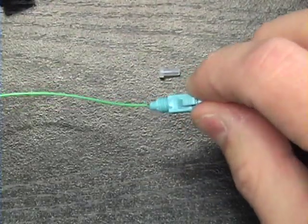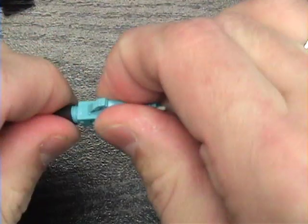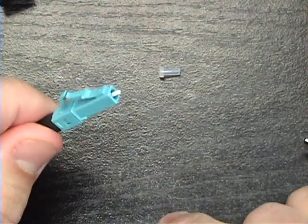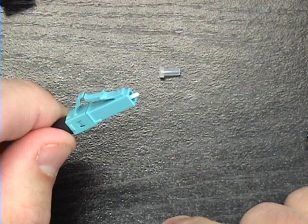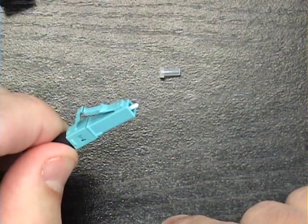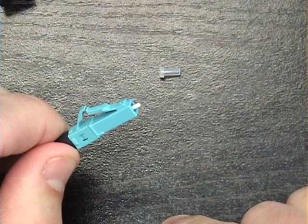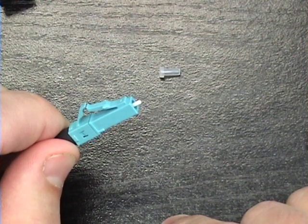In your last steps, put the boot on, clean the end face, and reinsert the dust cap. You have now terminated a CommScope Quick Connector 2.